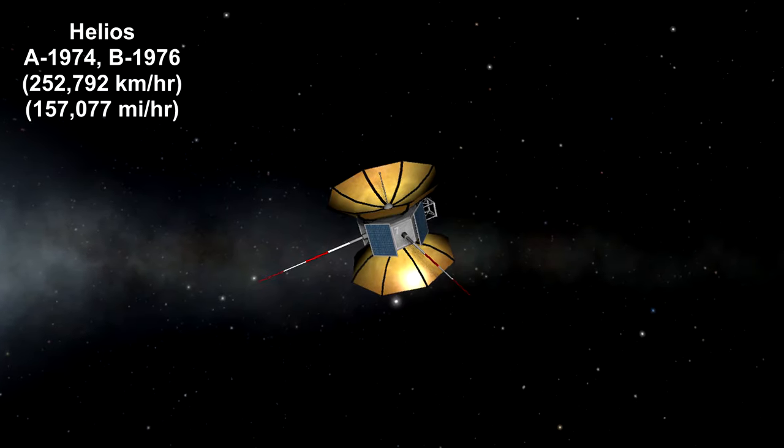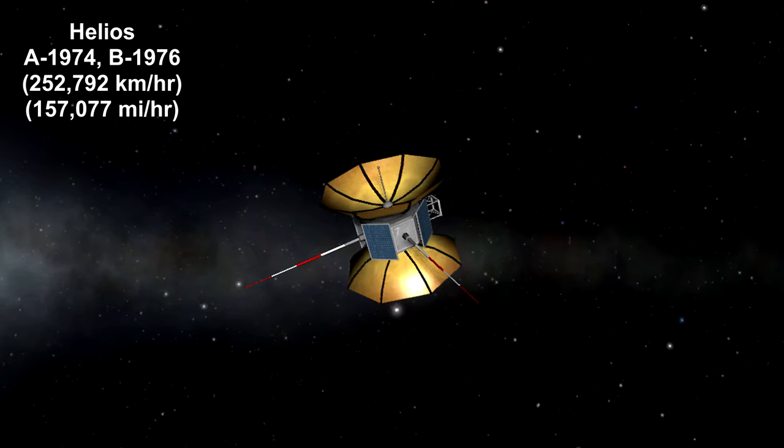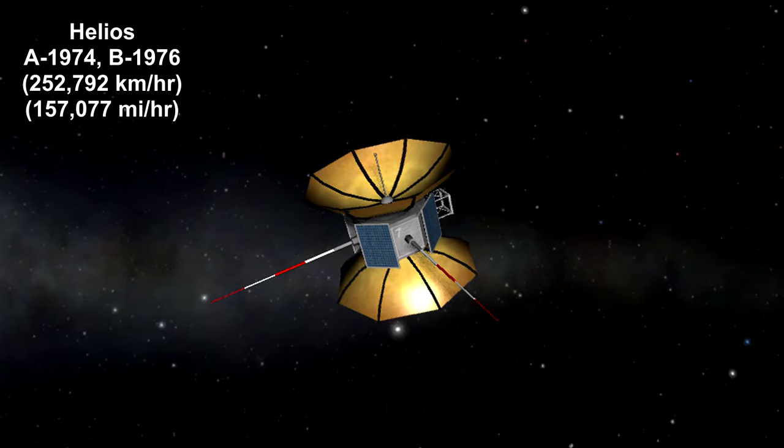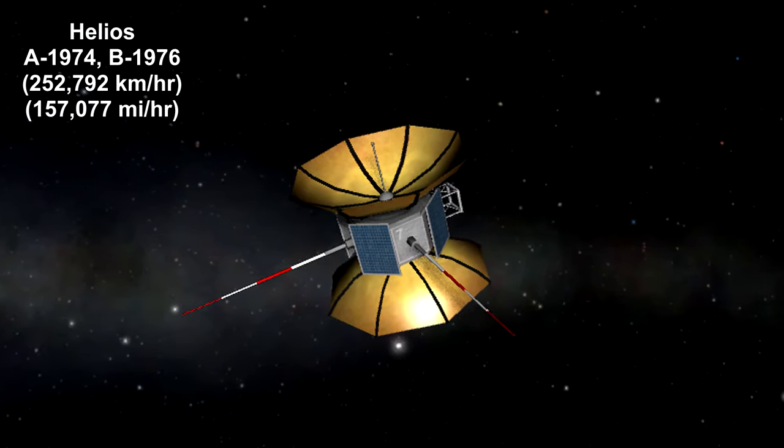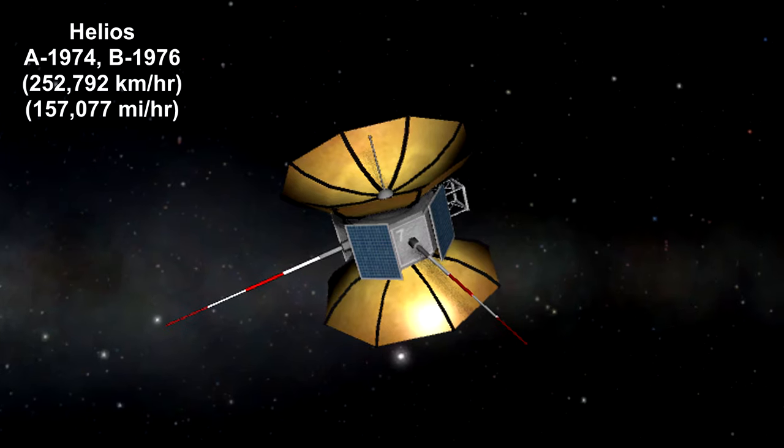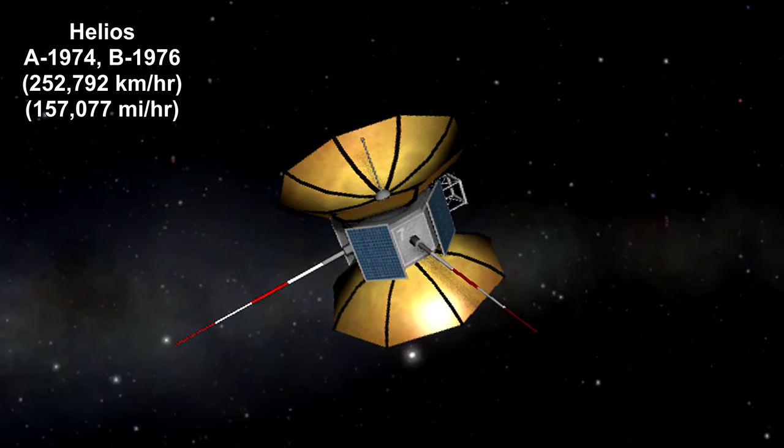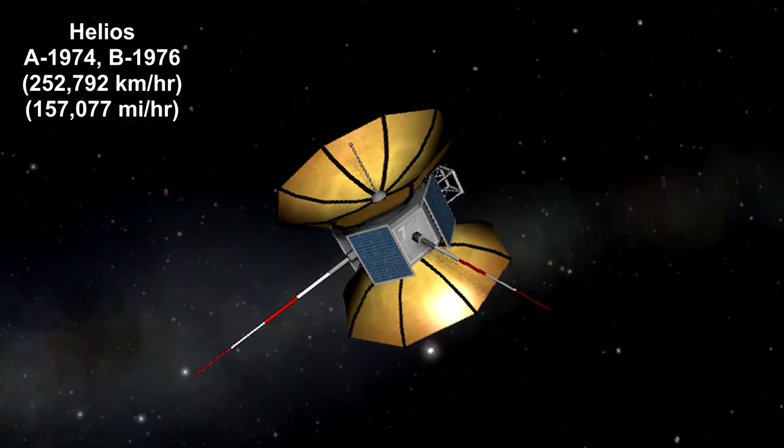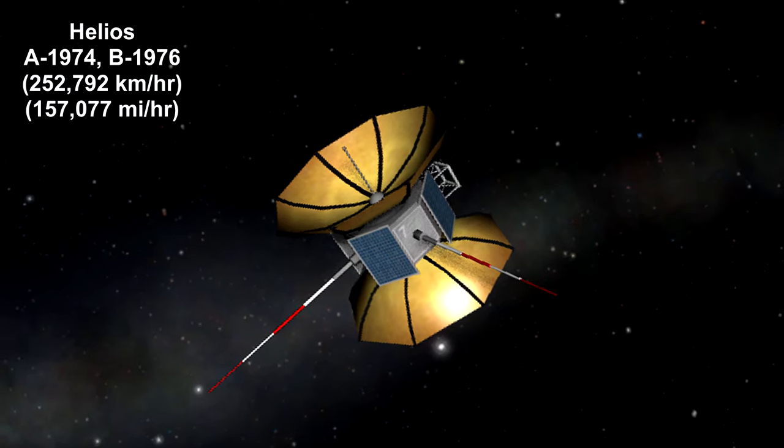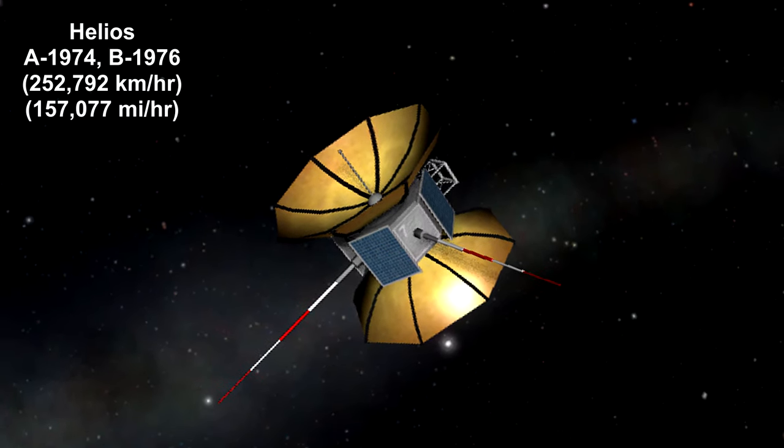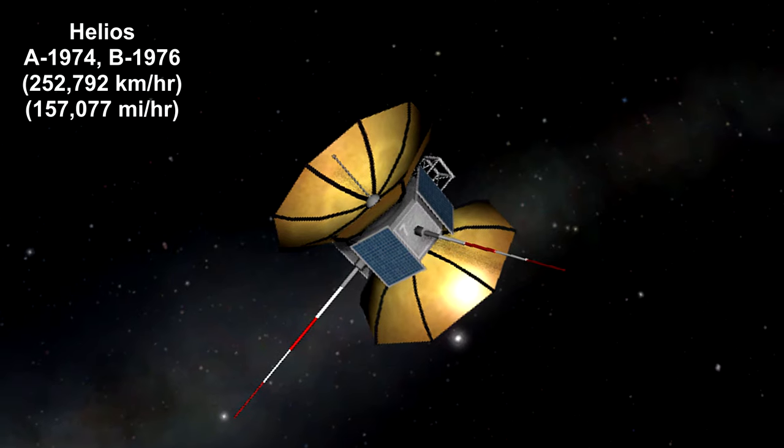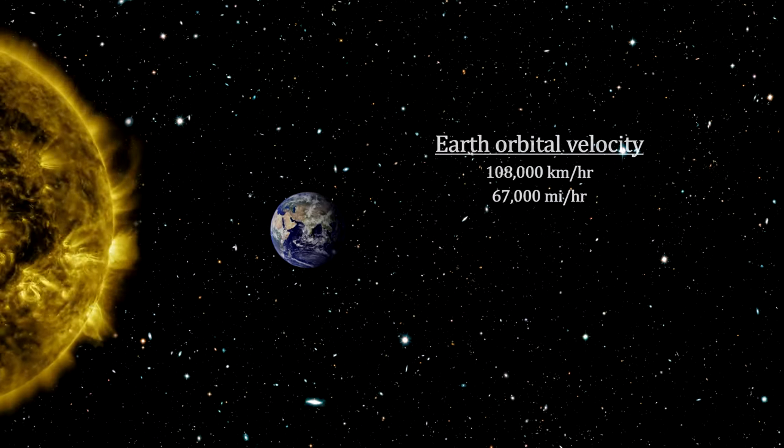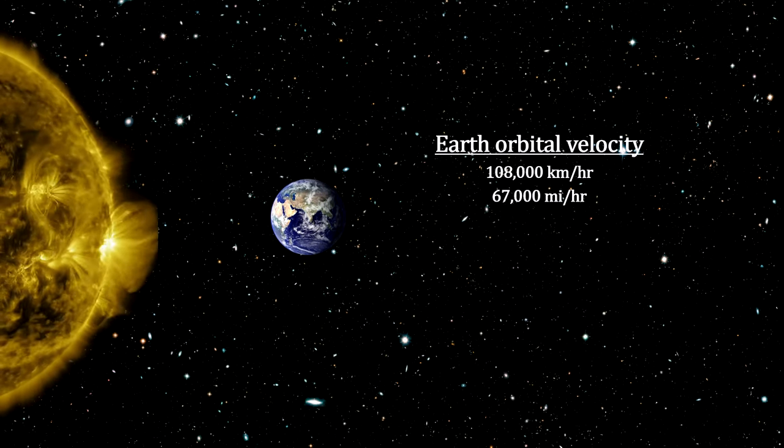Helios A and Helios B are a pair of probes launched into orbit around the Sun in order to study solar processes. Launched on December 10, 1974 and January 15, 1976, the probes were notable for having set a maximum speed record for spacecraft at 252,792 km per hour. That's 157,077 miles per hour. But this speed is measured relative to the Sun, not the Earth.